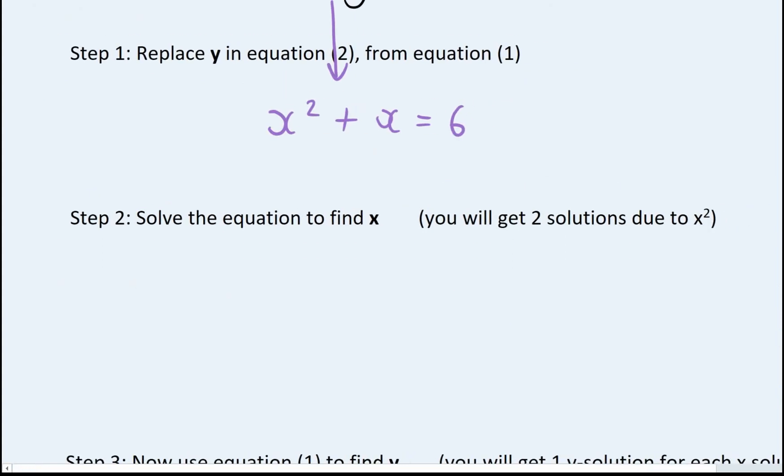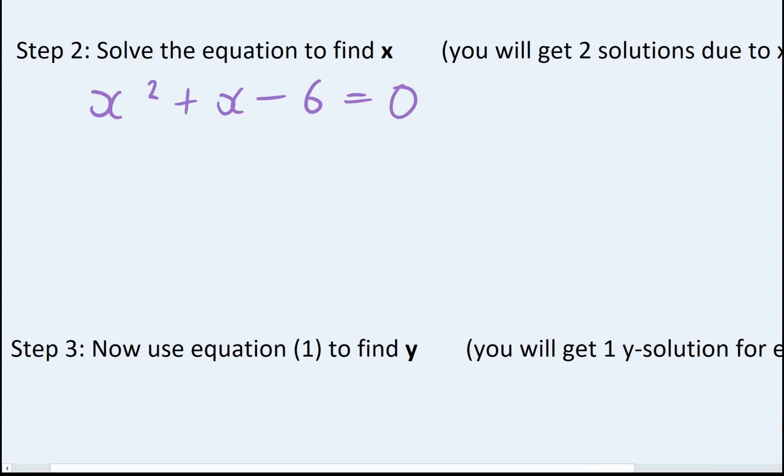Whenever you solve a quadratic, it must equal zero. So x squared plus x minus six equals zero. And all of these today we're going to solve or can be solved by factorising. So let's do that now. We should know this works by now.